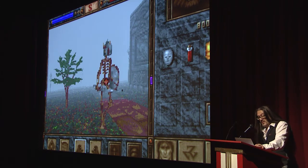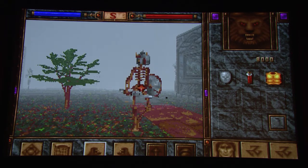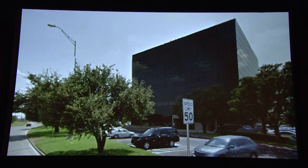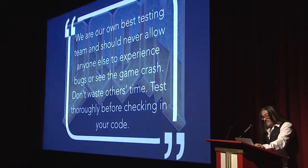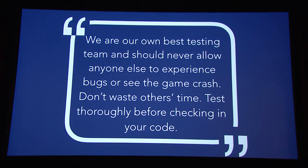Shadowcaster's tech improvements were sloping floors, lighting, and fog. This engine looked slightly better than Wolf 3D but it wasn't good enough for our next game. John Carmack spent some months thinking about how advanced the new engine should be for the game that we decided to call Doom. Based on the rapid development of our previous games, we came up with another important principle: we are our own best testing team and we should never allow anyone else to experience bugs or see the game crash. Don't waste other people's time. Test thoroughly before checking in your code.